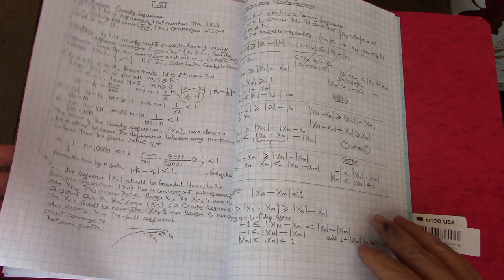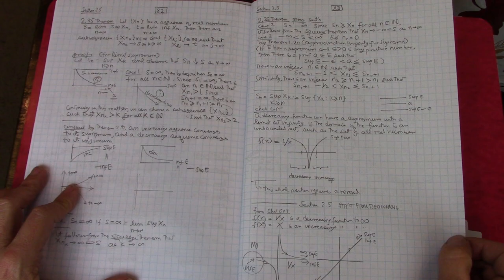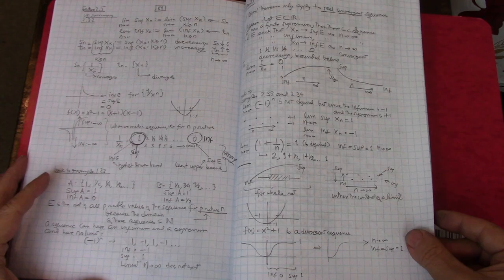Looking forward to making more progress - maybe three chapters a month. If I do three chapters a month, there are 15 chapters. It's January now - February, March, April, May, then June and July. I want to finish the reading before the course begins in August so I can do a bunch of problems. That's my progress so far.